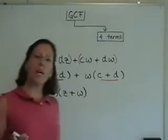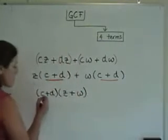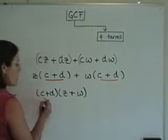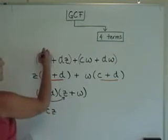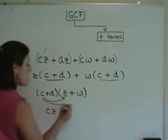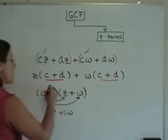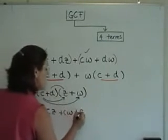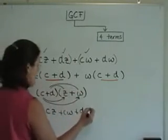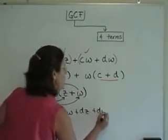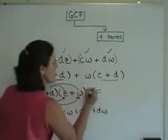The nice thing about this whole chapter is that I can check all of my answers. I'm going to FOIL this. c times z is cz — that's the first original term. c times w is cw — that's the second. The inner product is d times z — that's the third term. And finally, d times w — the last term. I see that I have what I started with, so this is the answer and this is my check.